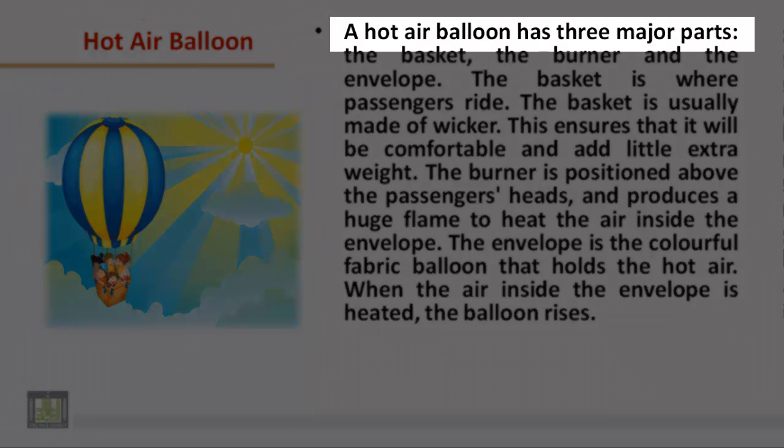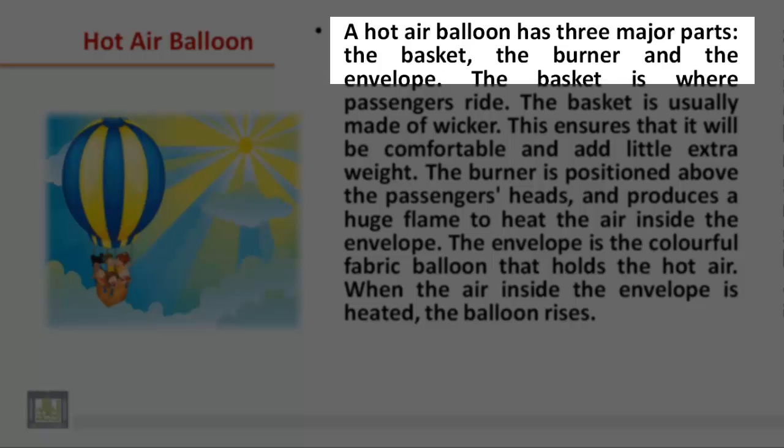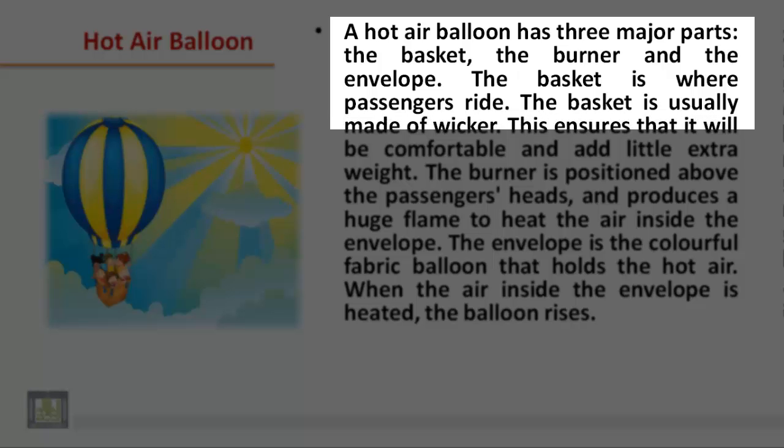A hot air balloon has three major parts: the basket, the burner, and the envelope. The basket is where passengers ride. The basket is usually made of wicker.